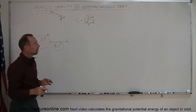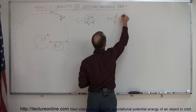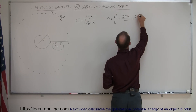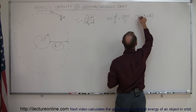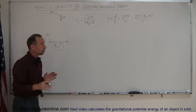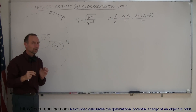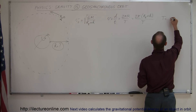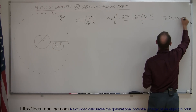We also know that velocity is equal to distance divided by time, which would be two pi times the radius over the orbital period — that is, two pi times the radius of the earth plus the height of the satellite divided by the orbital period. For geosynchronous orbits, the period has to be exactly the same as the rotation of the earth itself, which is 86,164 seconds.